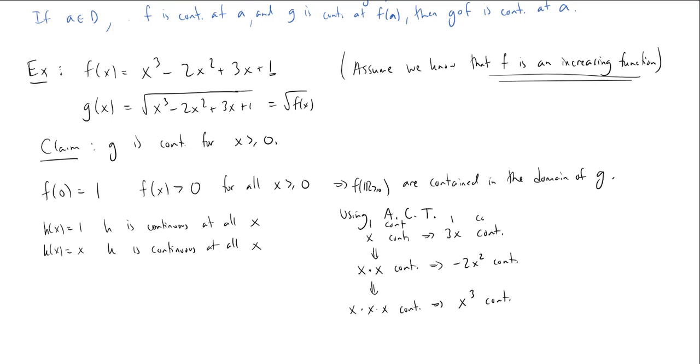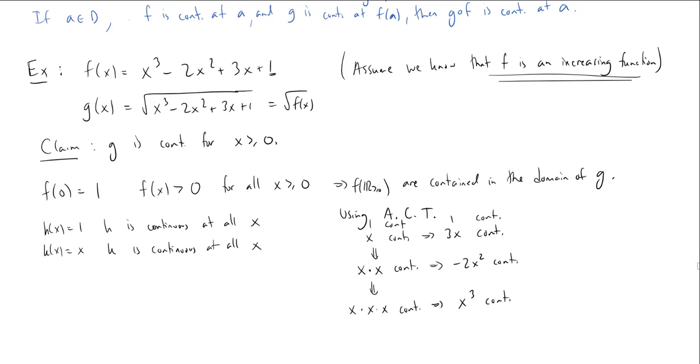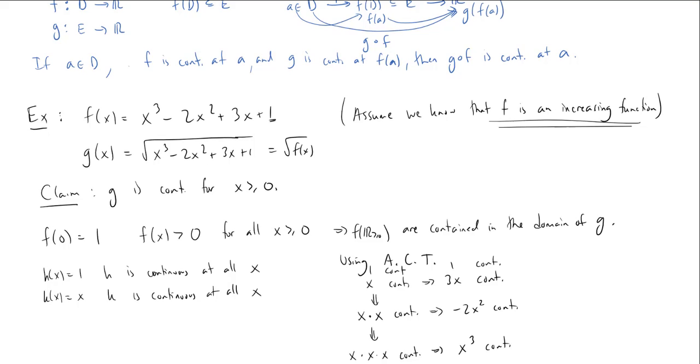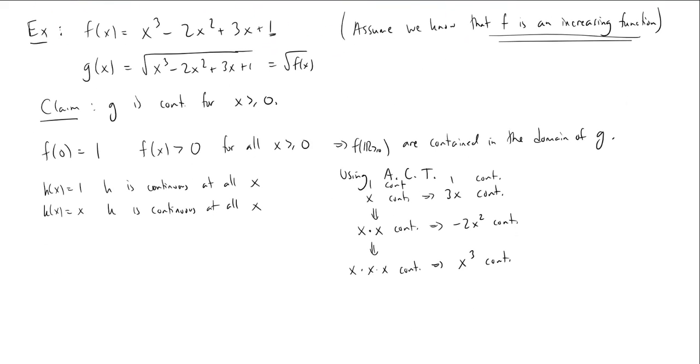And so now if I put this all together, one is continuous, I know by, again, the algebraic continuity theorem, if I add continuous functions, they stay continuous. And so if I put these all together, I get that x cubed minus 2x squared plus 3x plus 1 is continuous. So just doing these couple of very simple proofs, I'm able to, you can see, get any polynomial I like to be continuous, just from just 1 and x.